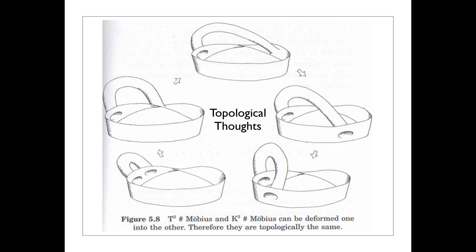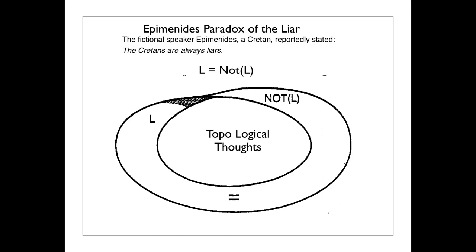It's a bit of the topology of the Mobius band. The Mobius band has a way of controverting a distinction when you go all the way around it. In this case, it controverts the distinction between the Taurus and the Klein bottle, a fact of surface topology. Well, that controversion leads one to make a cartoon about logic. Here is Epimenides' paradox of the liar. The fictional speaker Epimenides, a Cretan, reportedly stated, the Cretans are always liars.